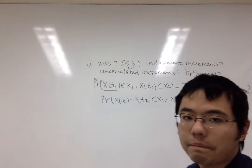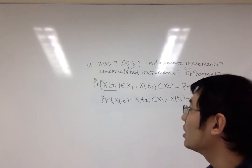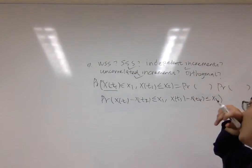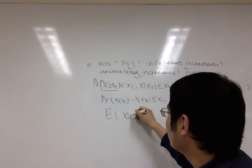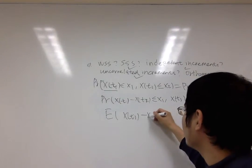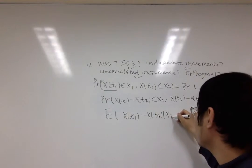Because independent implies uncorrelated, it's also an uncorrelated increment. As for orthogonal, if we write down the form of the judgment of orthogonal, we will find out that...